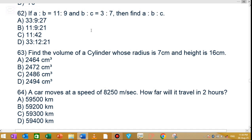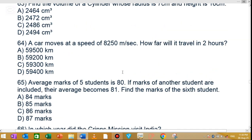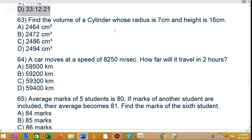MCQ number 63: Find the volume of a cylinder whose radius is 7 cm and height is 16 cm. The cylinder volume formula is pi r squared h. The correct answer is 2464 cubic cm. Option A is the correct answer.